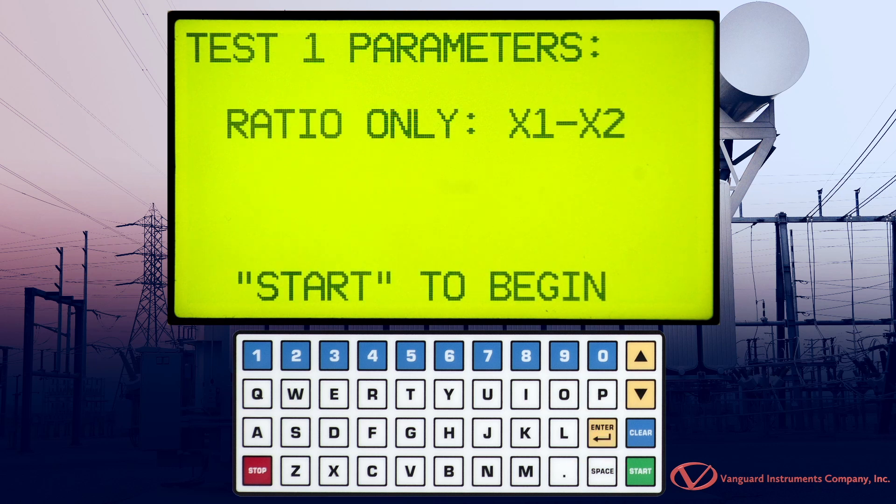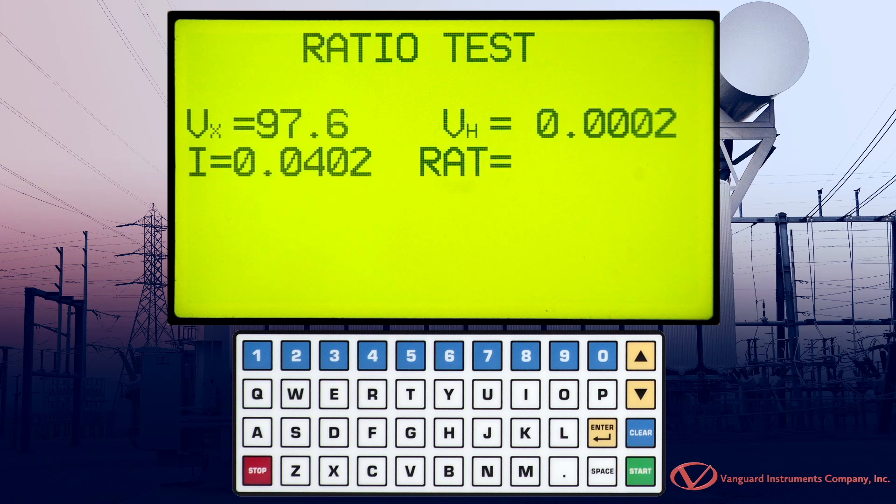Now a summary of the test parameters will be displayed. Press the start key to start running the test. The EZCT-2000C will start performing the ratio test.